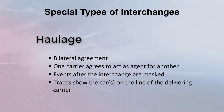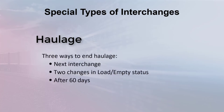Because the events are masked, the car owner does not see the events on the haulage carrier. The cars are shown on the line of the haulage rights carrier. Once the haulage interchange has been accomplished, there are three ways to end the haulage: either the next regular interchange will end the haulage, or two changes in load-empty status will end the haulage, or the haulage will end after 60 days.